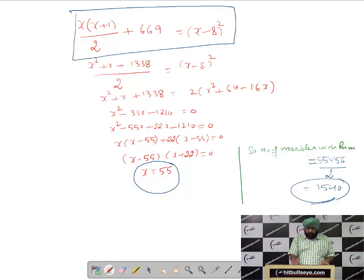So you will have to solve this complicated quadratic equation. On solving this tough quadratic equation, we get X as 55, and the number of marbles used by Ram will be 55 into 56 by 2, that is 1540. See, this is a very lengthy, very laborious process.